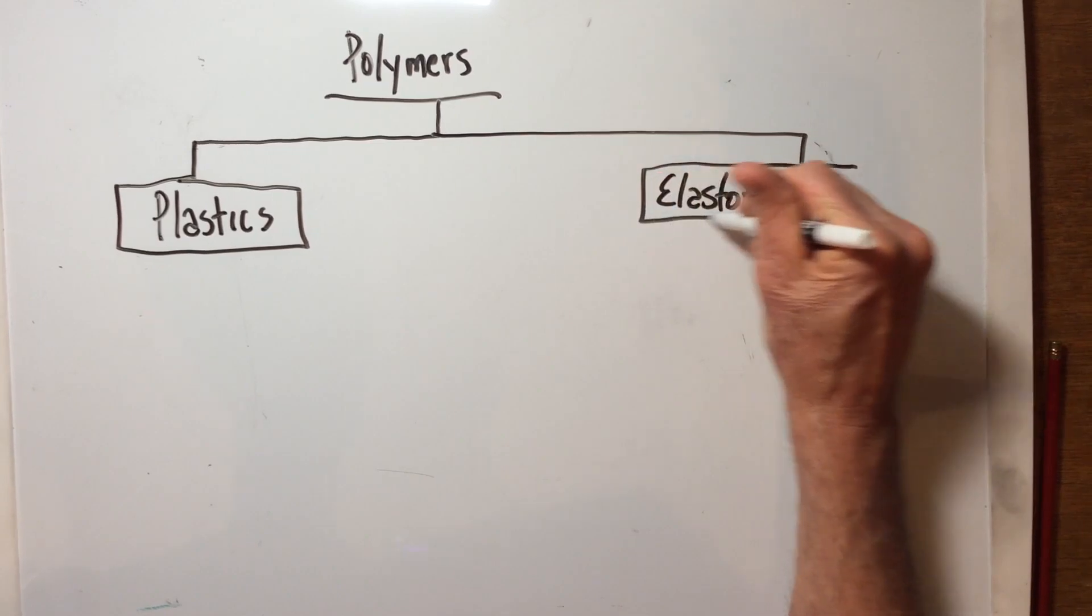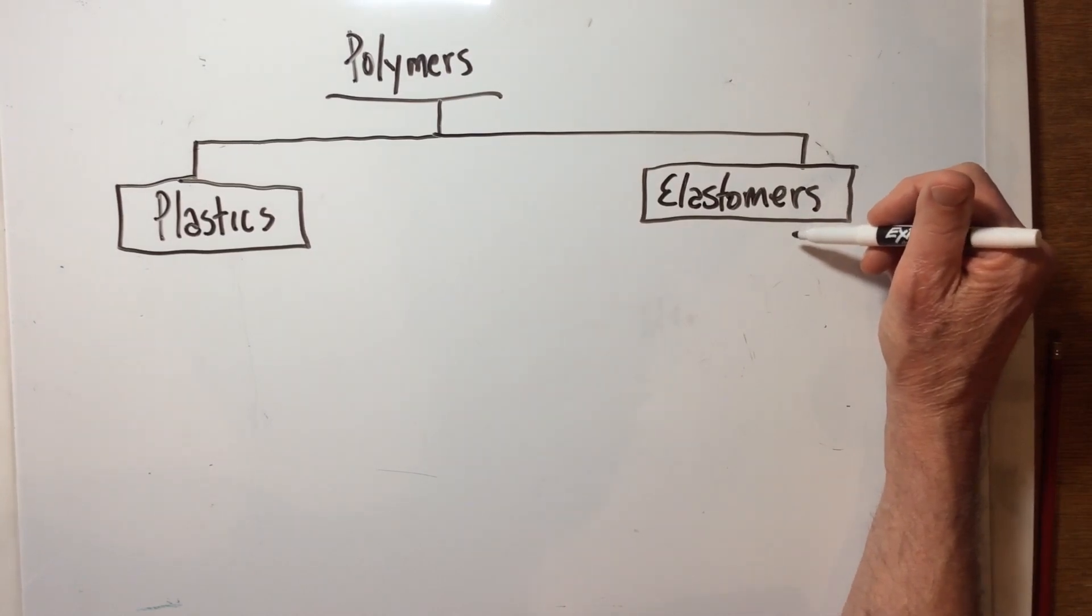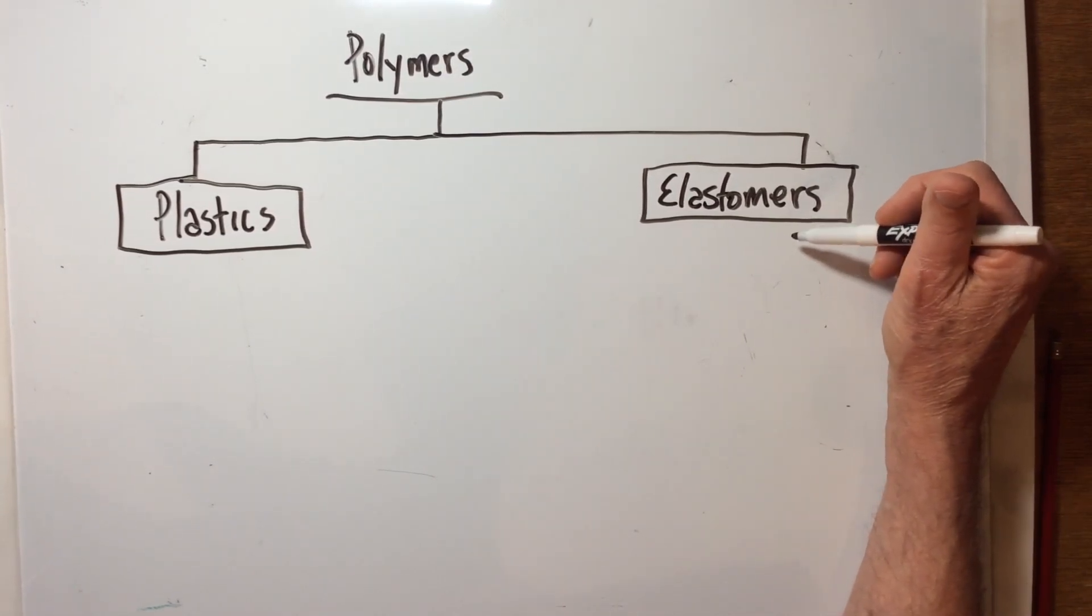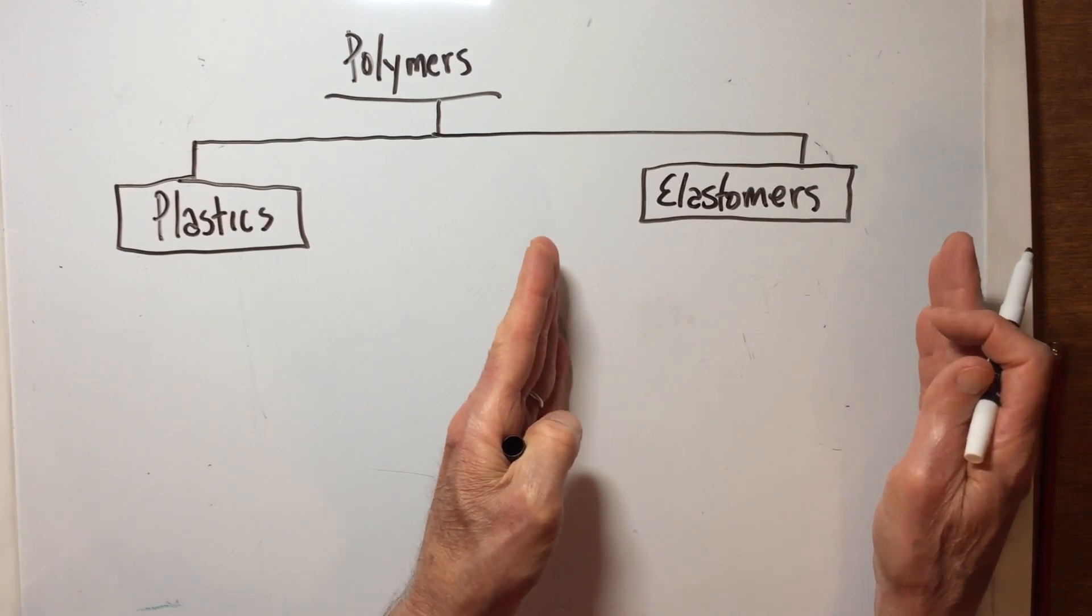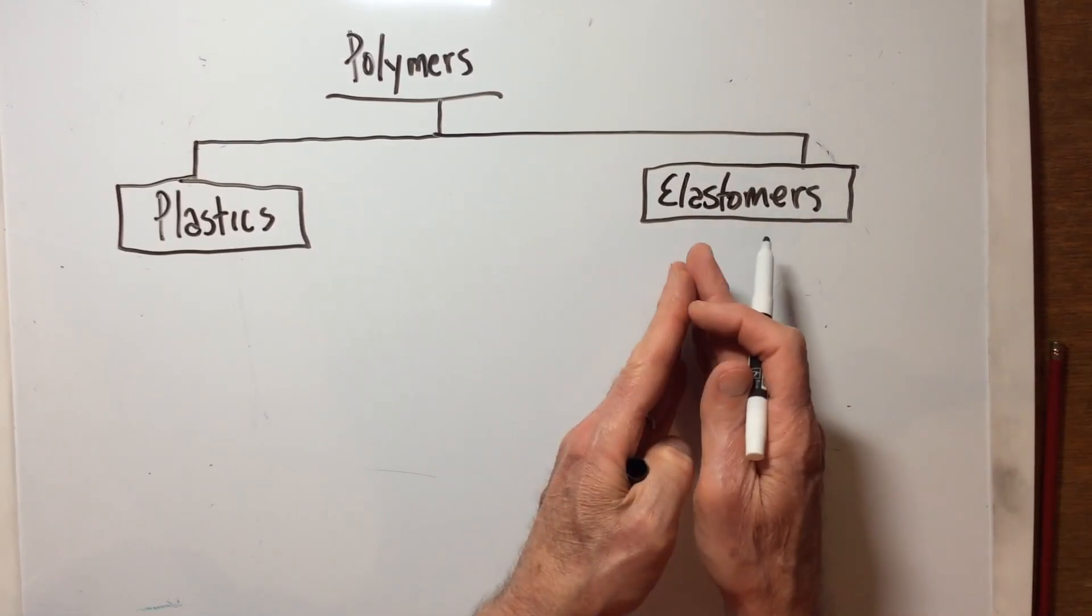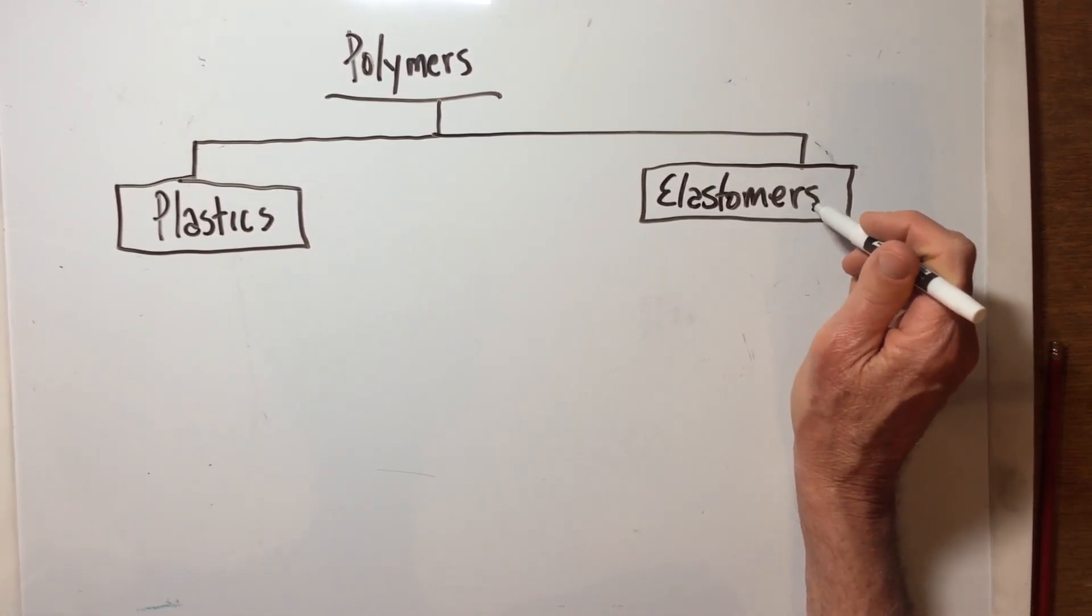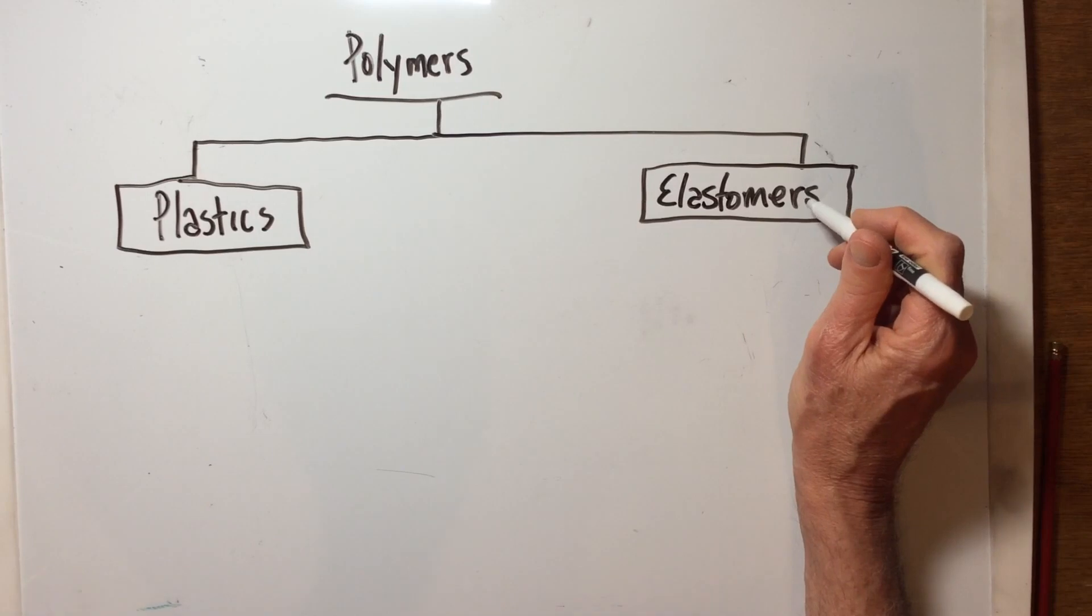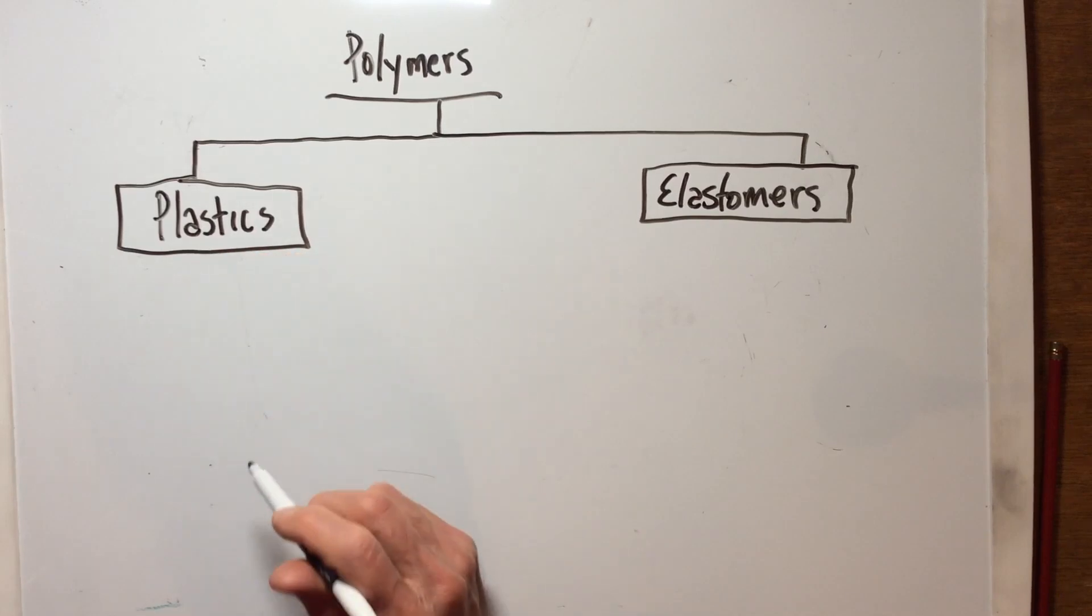The other category would be elastomers. They behave completely different than plastics. We're not going to spend much time on elastomers, kind of like we didn't spend much time on non-ferrous metals. Elastomers are materials that at room temperature can stretch greatly, beyond twice their average length, and then release, goes completely right back to where it was. So it stretches and goes back, stretches and goes back. Rubber is an excellent example of that, and different types of elastomers that are out there - neoprene, things like this, made out of gaskets. We're not really going to talk about elastomers much, we're going to concentrate over here on plastics.